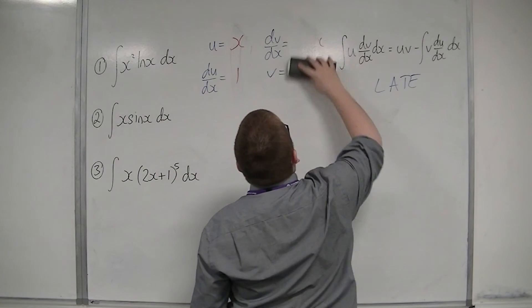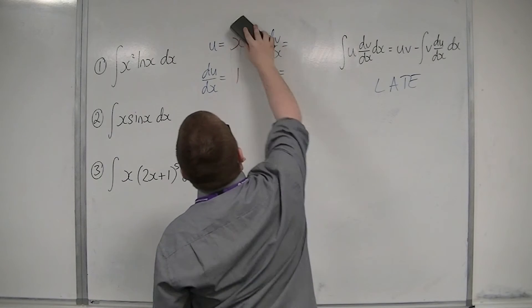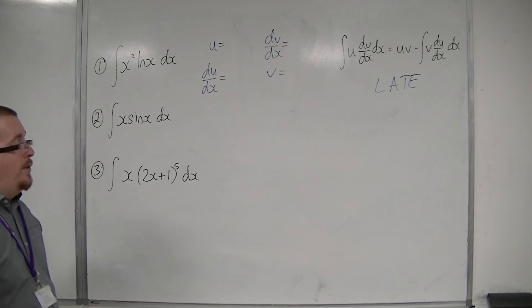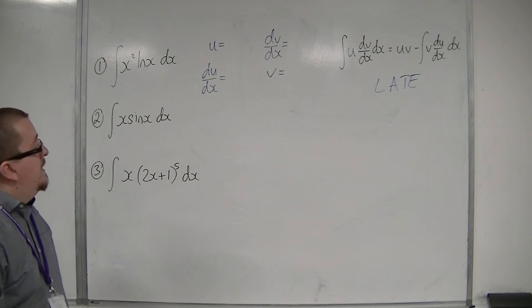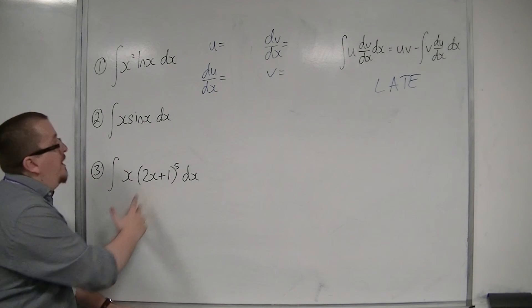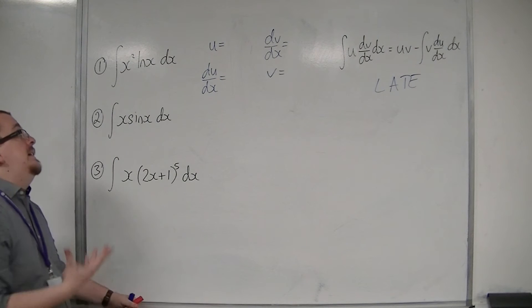So finally, let's look at number three. Number three, x times 2x plus 1 to the power of 5. Now here, we don't have any logarithms, but we've actually got two sets of algebra here. So which one should we pick to be u?